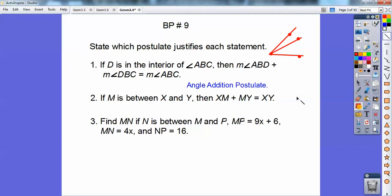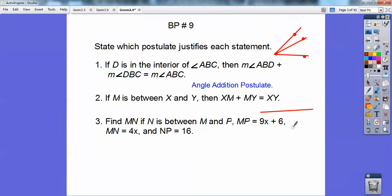So this one says if M is between X and Y, that would be the Segment Addition Postulate. If M is between X and Y, say there's M right there, and there's X right there, and there's Y right there, then this is saying that this little piece right here plus this little piece equals the entire piece. So this one is called Segment Addition Postulate.